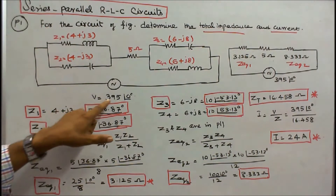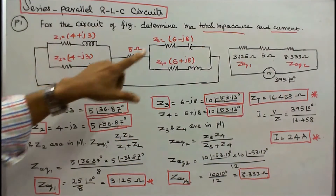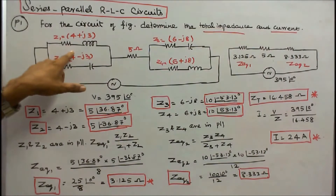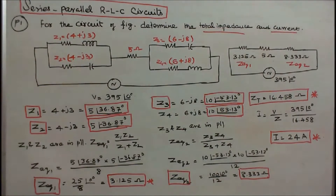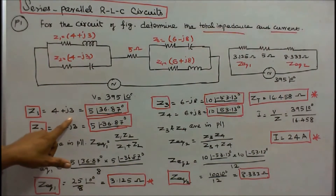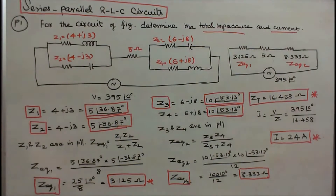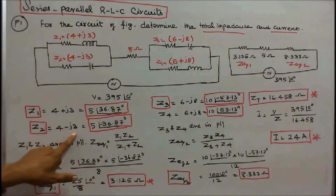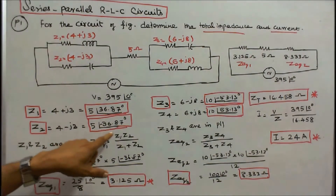The voltage is given as 395∠0°. The impedance values are in rectangular form. First step, we have to convert into polar form. Z1 = 4 + j3 in rectangular form; in polar form, 5∠36.87°. Z2 = 4 − j3 in rectangular form; in polar form, 5∠−36.87°.